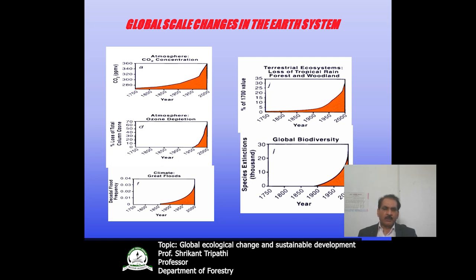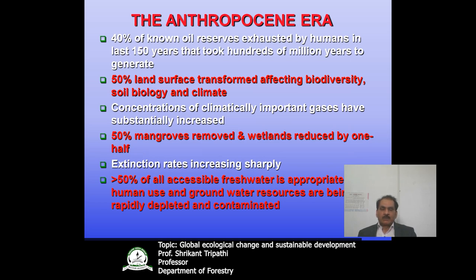There is a sharp rise after 1950, after we have been looking for a comfortable lifestyle. In the Anthropocene era, predictions show 40 percent of known oil reserves have been exhausted in the last 150 years — reserves that took hundreds of millions of years to generate. About 50 percent of land surface has been transformed, affecting biodiversity, soil biology, and climate. Concentration of climatically important gases has substantially increased. 50 percent of mangroves have been removed and wetlands reduced by half. Extinction rates are increasing sharply. 50 percent of all accessible fresh water is now used for human use and water reserves are going down.